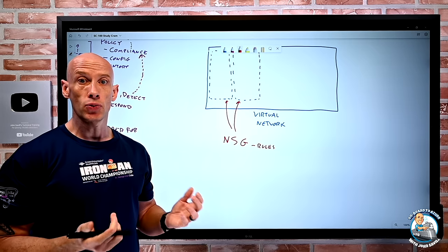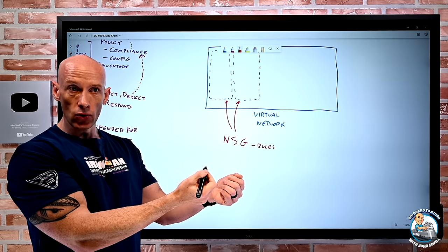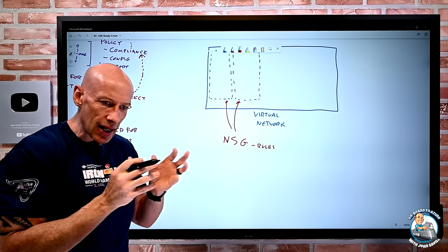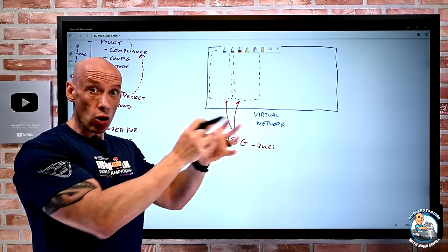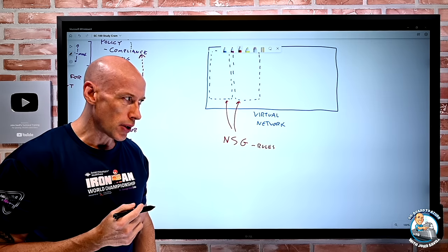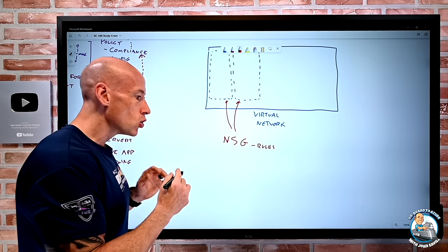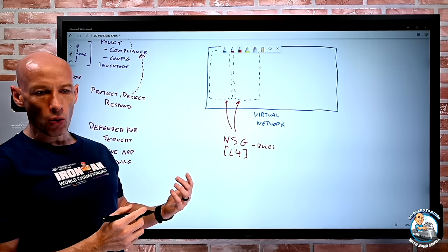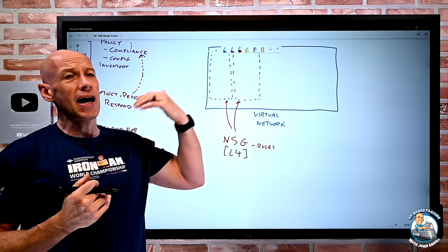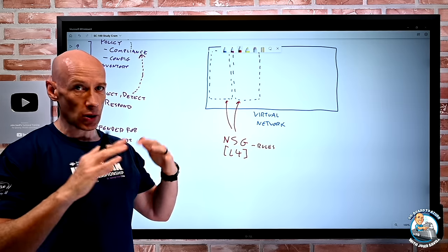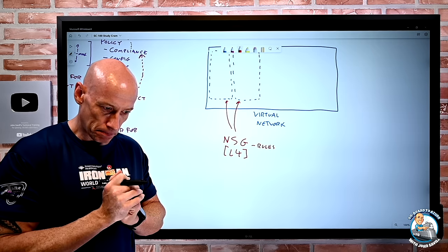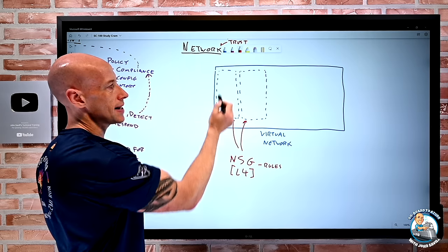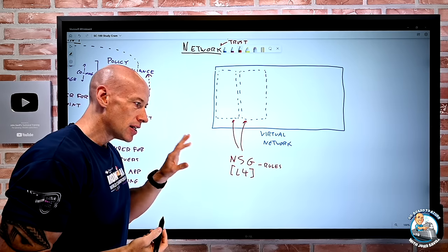There are also Application Security Groups — a tag on the NIC of a resource — so instead of basing rules on IP address, you can say 'is the NIC tagged with this particular tag?' like SQL VM, and apply different rules. Network Security Groups enable layer-4 micro-segmentation — understanding TCP, UDP, port, and IP — but they don't understand application-layer constructs like HTTPS or fully qualified domain names. NSGs let me say: I'll let these things talk but not talk to the internet or this other subnet.